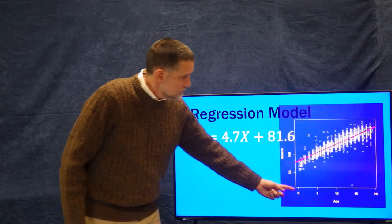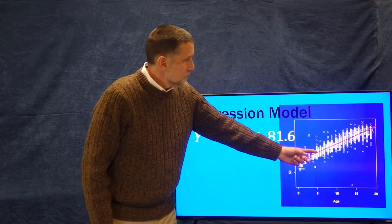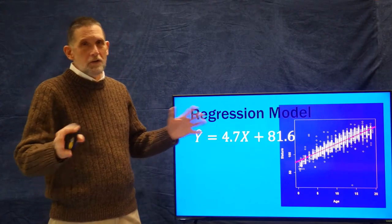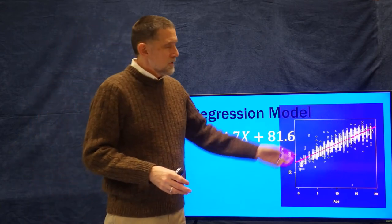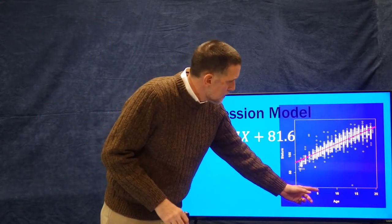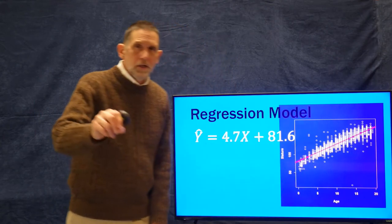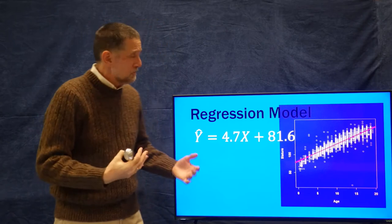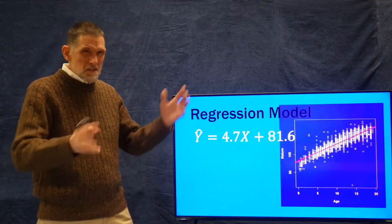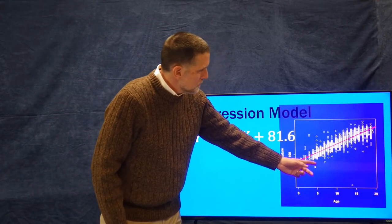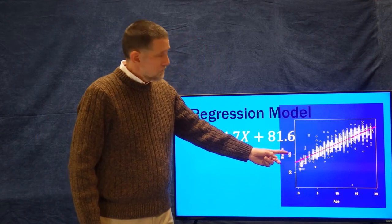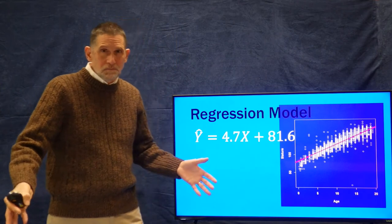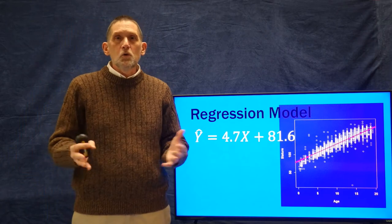If we go to five years old: five times 4.7 is 23.5, plus 81.6 is about 105 or 106. Looking at the graph, we go up at age 5, come across, and yes — it's about 106. It's like magic. That's how regression or prediction works.